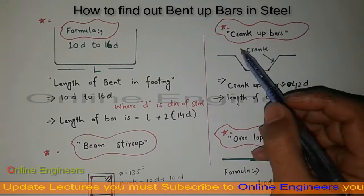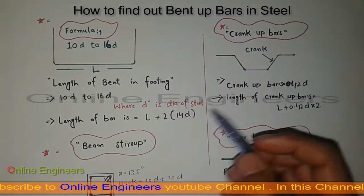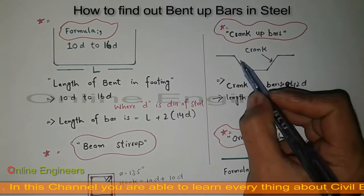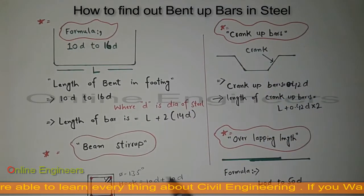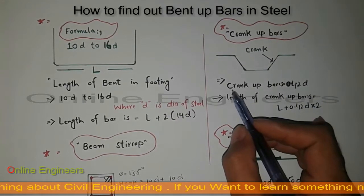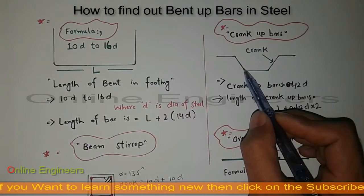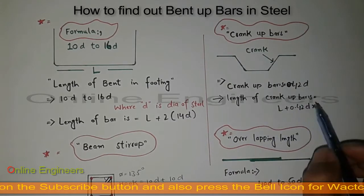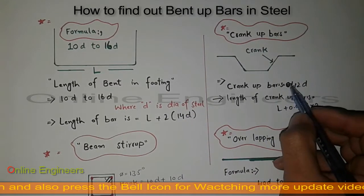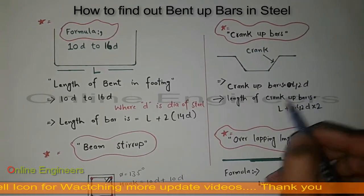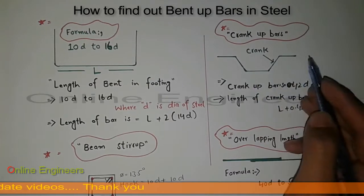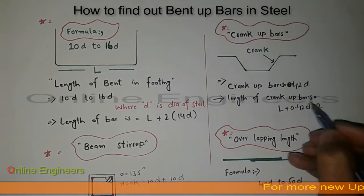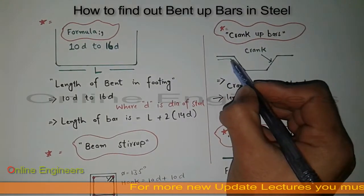The third one we have is crank up bars. This is the crank and we provide it in slabs for different purposes. How can I find out the length of cranks? The formula for the crank up bar is 0.42d. Now I want to find out the total length of this one bar — capital L. The first length is this one, the second is this one.